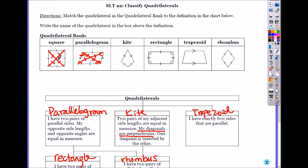What about kite? Only adjacent sides are equal. Opposite sides are not parallel, but the diagonals are perpendicular like square. You guys see it?